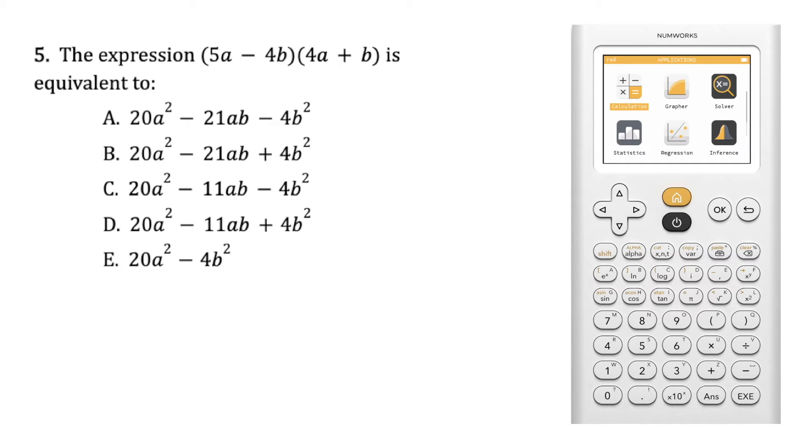So first, we are going to distribute 5a times 4a, which gives us 20a squared, 5a times b, which is 5ab,